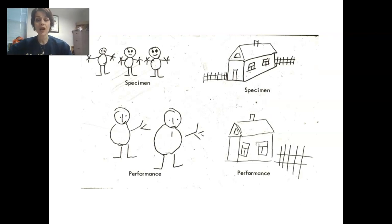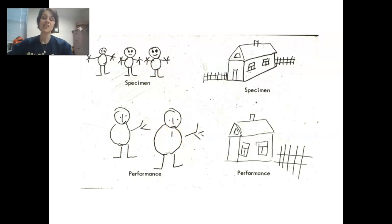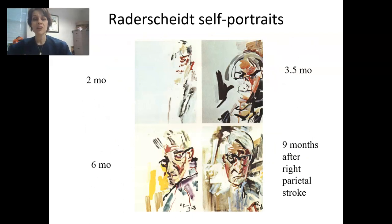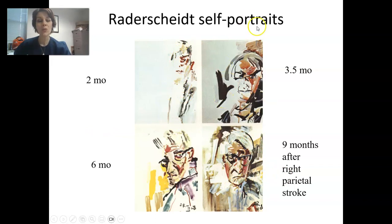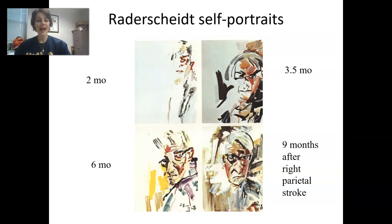Additionally, if you ask them to draw or copy different figures, you'll notice that more time is devoted to the right half of that space than the left. Here is a painter named Radderscheid who had a stroke in his posterior parietal cortex on his right side. You can actually see his neglect and how he got better over time — at two months, he's really only paying attention to the right half of space, and by nine months, he's paying more attention to the left, though there's still more detail on the right.